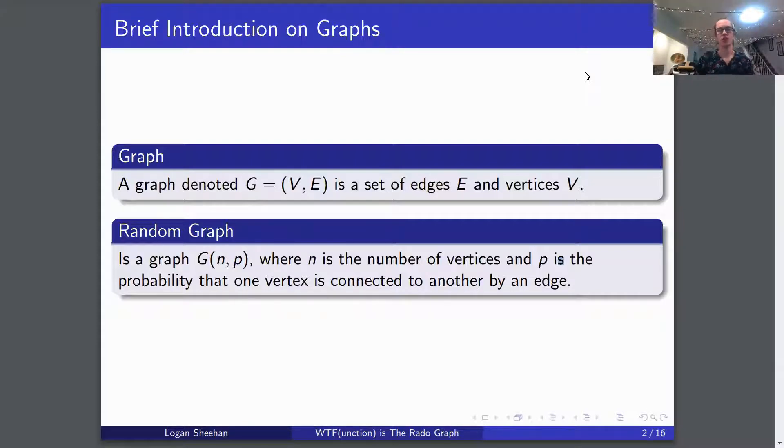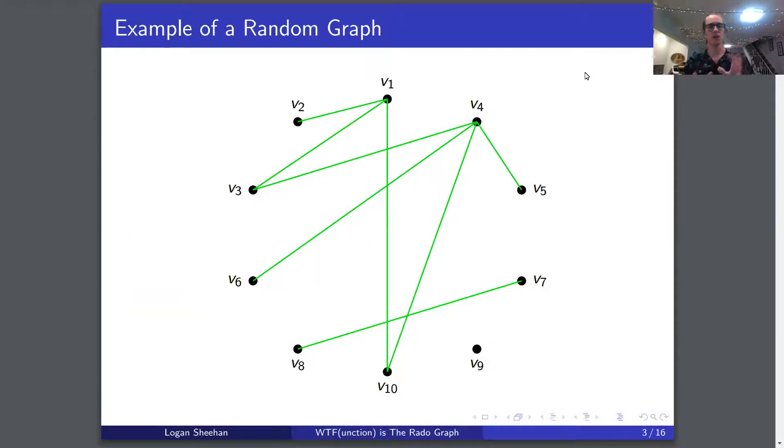A graph, denoted g equals v e, is a set of edges and vertices. The vertices are just dots, and our edges are lines that connect two vertices. So now, what is a random graph? It is a graph g n p, where n is the number of vertices and p is the probability that one vertex is connected to another by an edge. We have this lovely picture showing clearly an edge between v2 and v1, but not between v3 and v6, and all of these edges were randomly chosen.